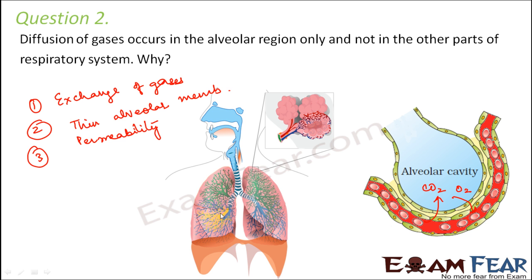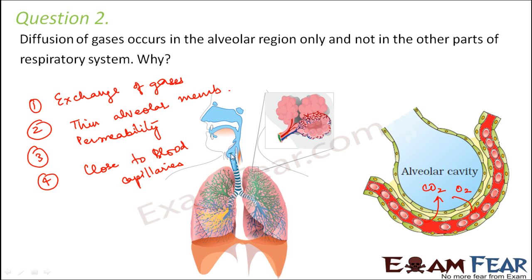Other parts of the respiratory system are not structured in this fashion. Moreover, the alveoli are quite close to the blood capillaries. For other parts — whether the nostrils or the nasopharynx — all these conditions are not satisfied. So the alveoli are structured such that exchange of gases takes place only in the alveolar region.